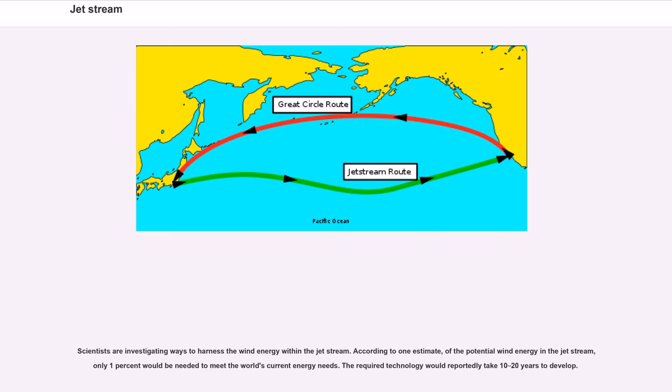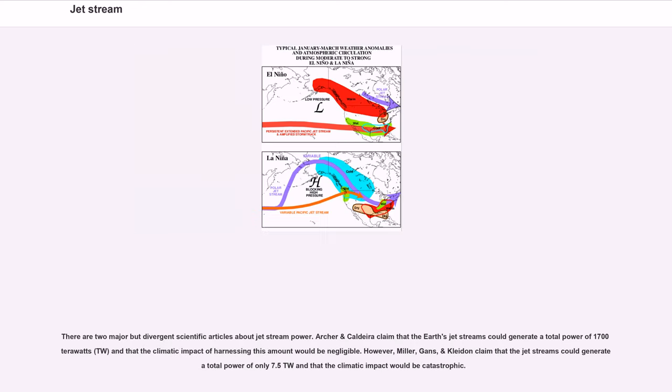Scientists are investigating ways to harness the wind energy within the jet stream. According to one estimate, of the potential wind energy in the jet stream, only 1% would be needed to meet the world's current energy needs. The required technology would reportedly take 10 to 20 years to develop. There are two major but divergent scientific articles about jet stream power. Archer and Caldera claim that the Earth's jet streams could generate a total power of 1,700 terawatts (TW), and that the climatic impact of harnessing this amount would be negligible. However, Miller, Gans, and Kleidon claimed that the jet streams could generate a total power of only 7.5 TW and that the climatic impact would be catastrophic.